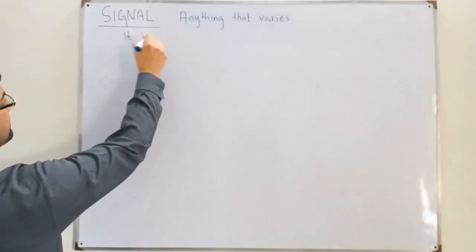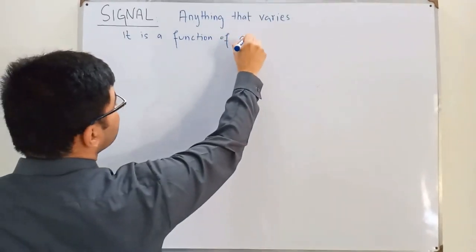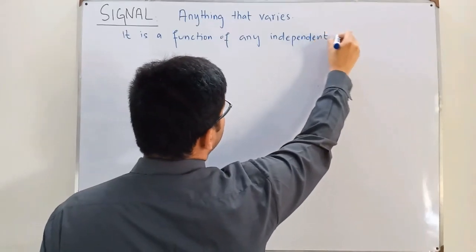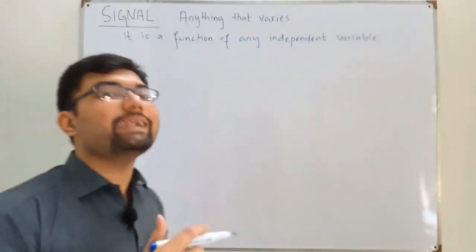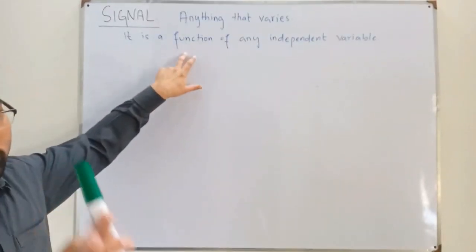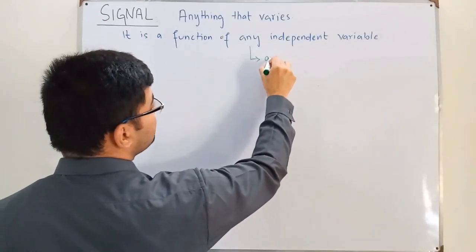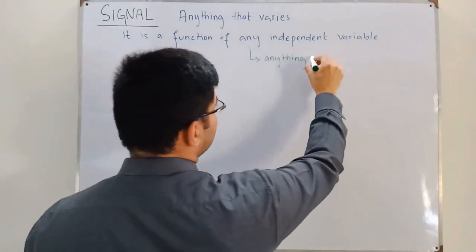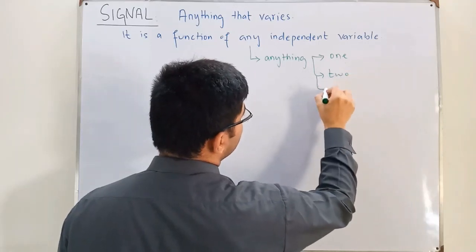The proper definition: a signal is a function of any independent variable — it changes with an independent variable, which means the signal is a dependent quantity. Now, this 'any' means it could be anything — it could be any number of variables. It could be one variable, it could be two, or it could be any number n.